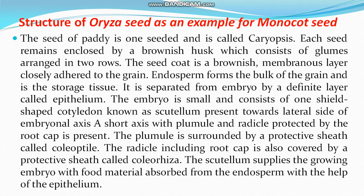The embryo is small, consisting of one shield-shaped cotyledon known as the scutellum, present towards the lateral side of the embryonal axis. A short axis with a plumule and radicle protected by the root cap is present. The plumule is surrounded by a protective sheath called the coleoptile. The radicle including root cap is also covered by a protective sheath called the coleorhiza. The scutellum supplies the growing embryo with food material absorbed from the endosperm with the help of the epithelium.